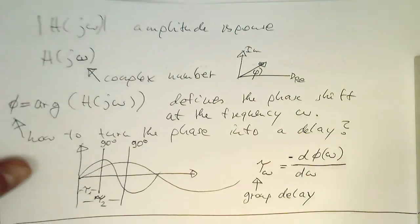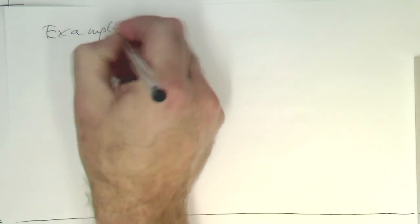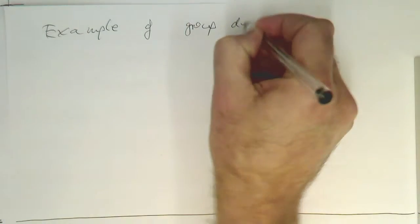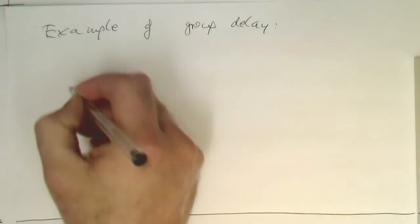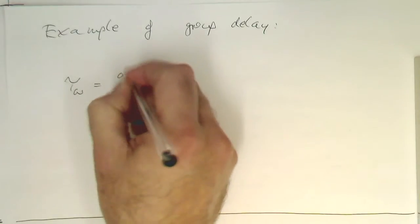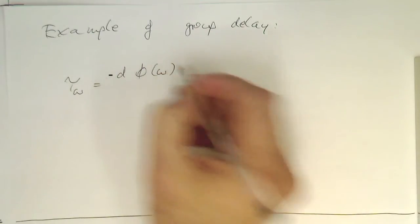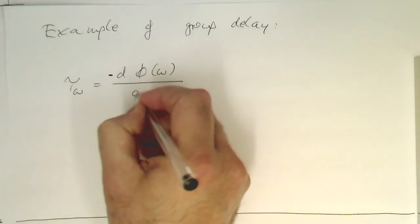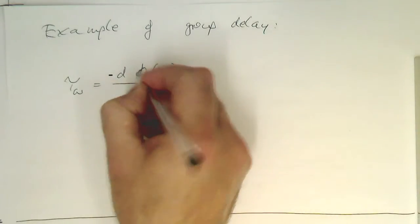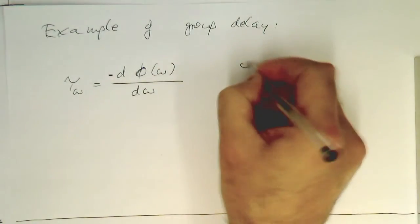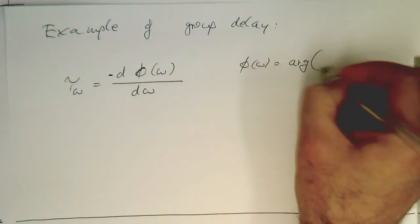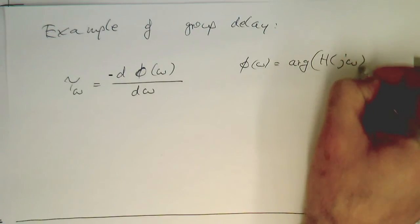Let's have an example. Example of group delay. Let's write this group delay definition again. That's d phi over d omega. That's our definition of the group delay according to the phase. And the phase phi of omega is arc of H of j omega.